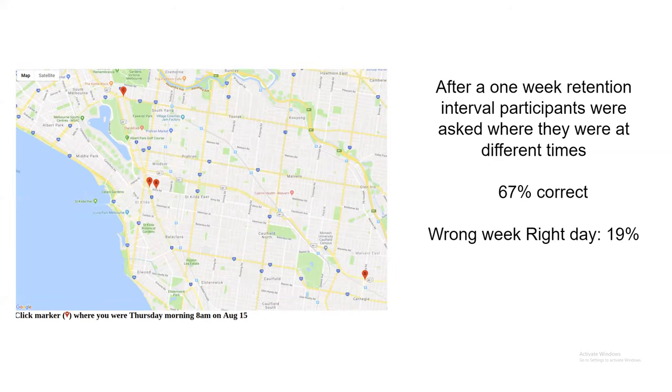After a week of retention interval, they received a set of trials. In each trial, they were given a time, such as Thursday morning 8am on August 15, and four possible locations that they had visited. They had to choose which of those four locations, and they were right about 67% of the time.